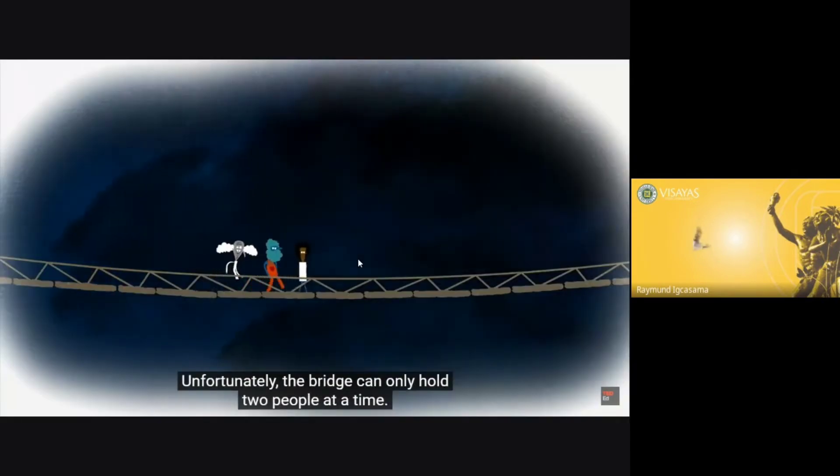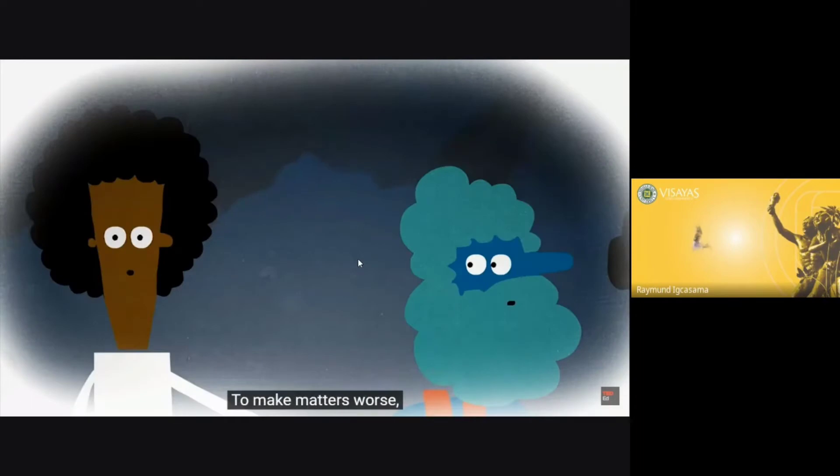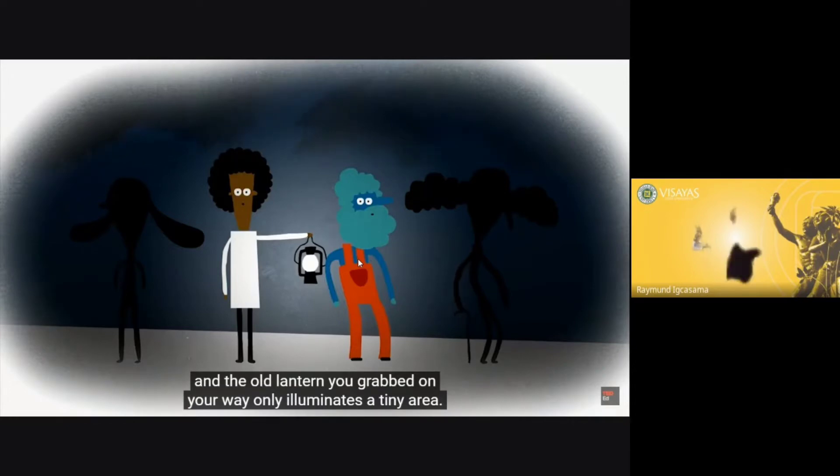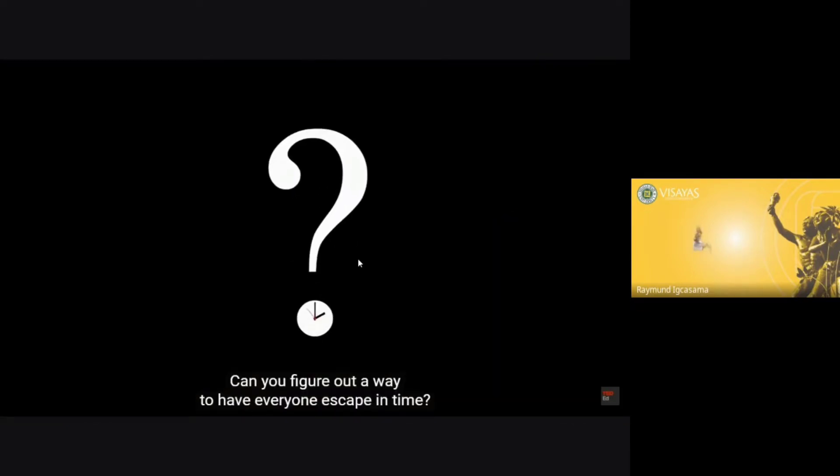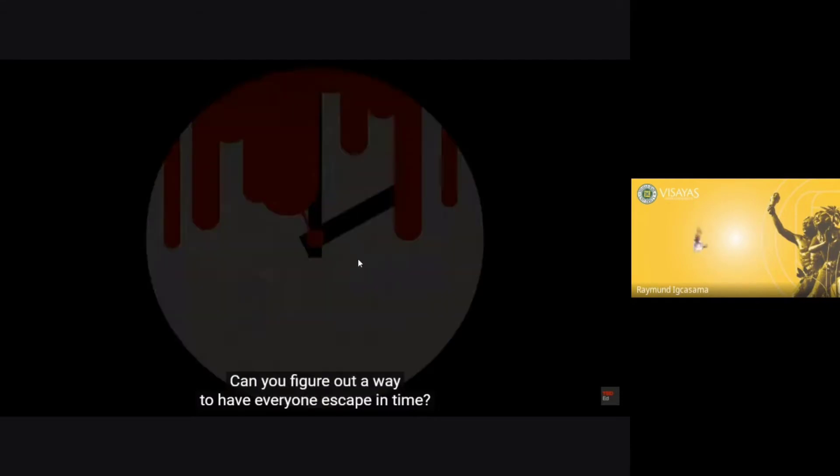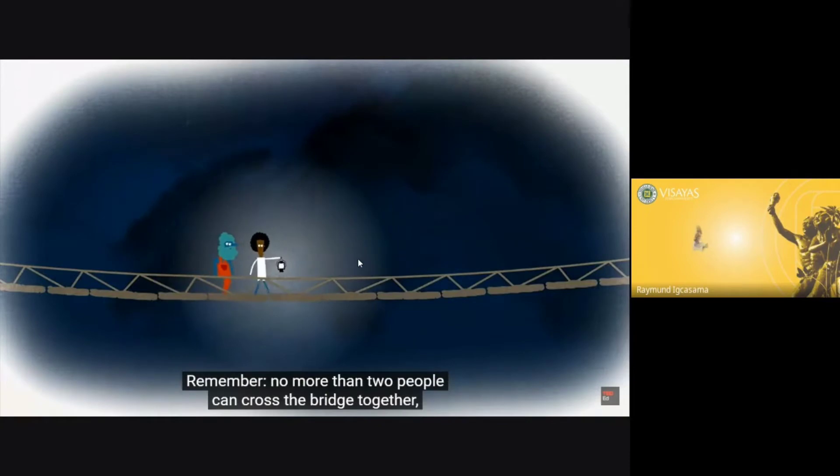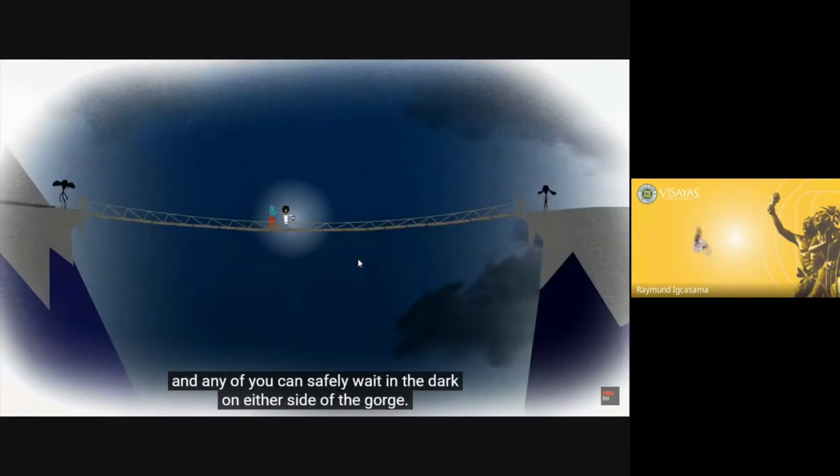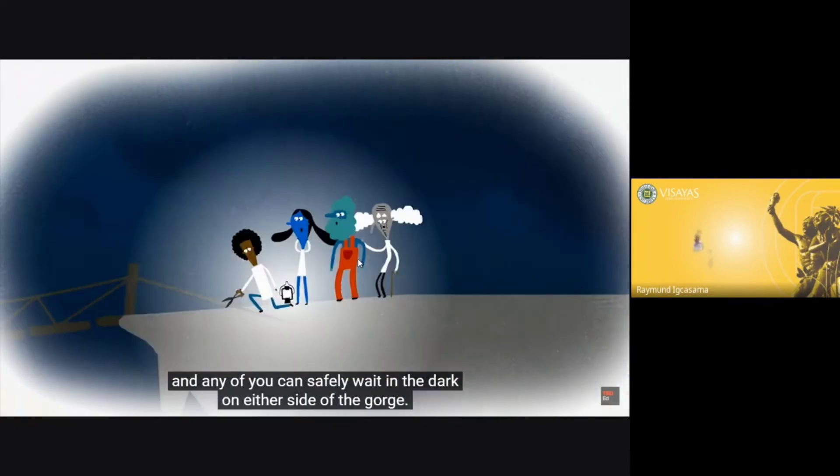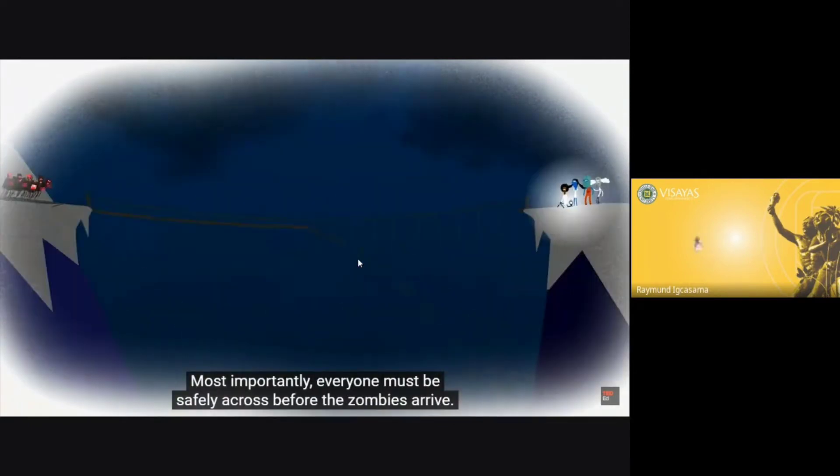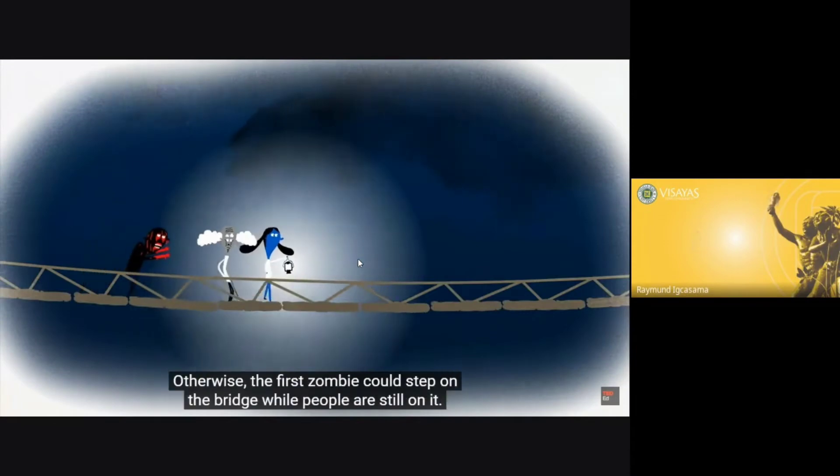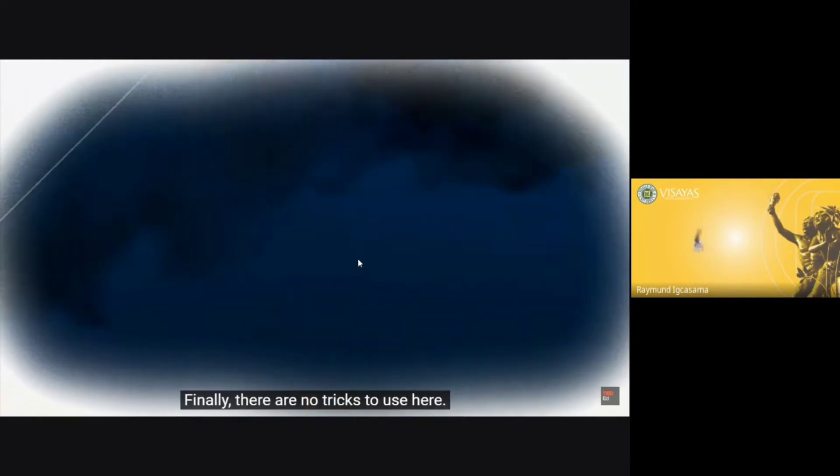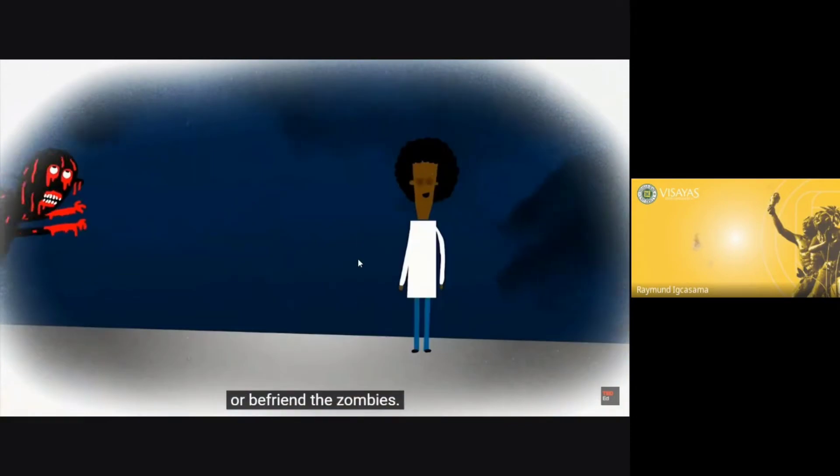Unfortunately, the bridge can only hold two people at a time. To make matters worse, it's so dark out that you can barely see, and the old lantern you grabbed only illuminates a tiny area. Can you figure out a way to have everyone escape in time? Remember, no more than two people can cross the bridge together. Anyone crossing must either hold the lantern or stay right next to it, and any of you can safely wait in the dark on either side of the gorge. Most importantly, everyone must be safely across before the zombies arrive. Finally, there are no tricks to use here. You can't swing across, use the bridge as a raft, or befriend the zombies.